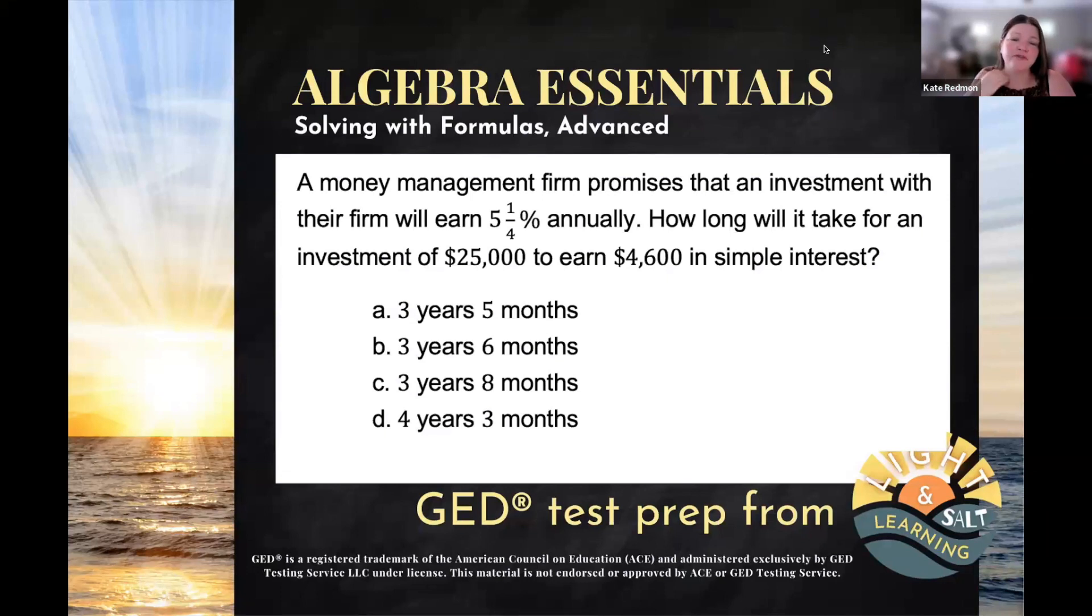A money management firm promises that an investment with their firm will earn 5.25% annually. How long will it take for an investment of $25,000 to earn $4,600 in simple interest?